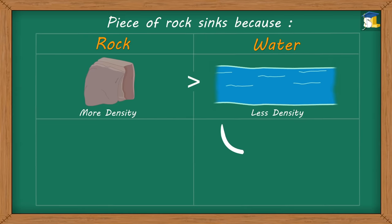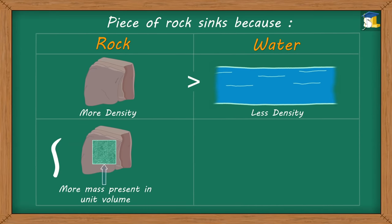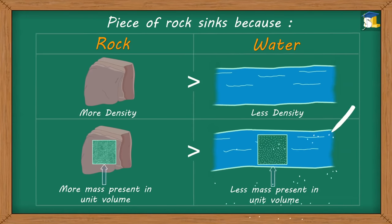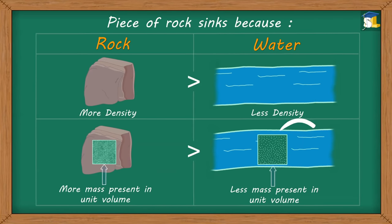However, in the second case, the piece of rock sinks because it has more density than water. This means that the amount of mass present in unit volume of rock is more than the amount of mass present in unit volume of water.